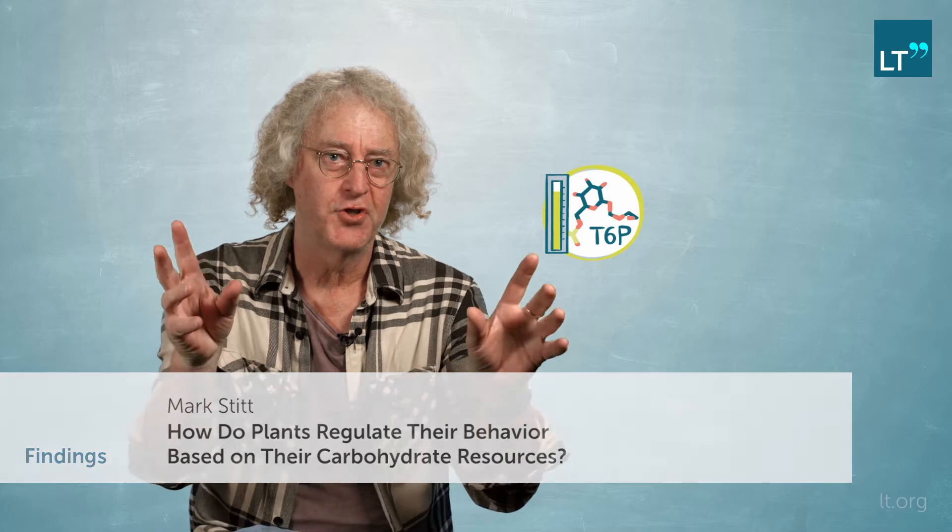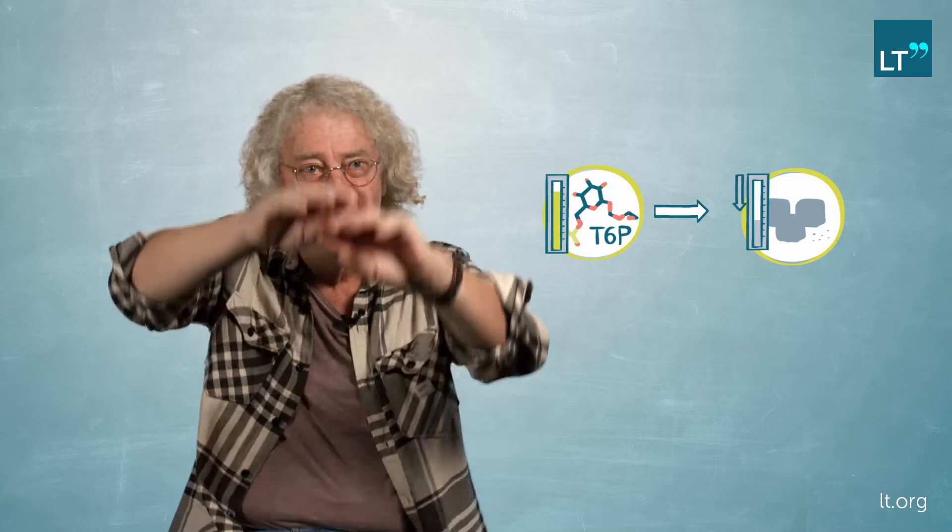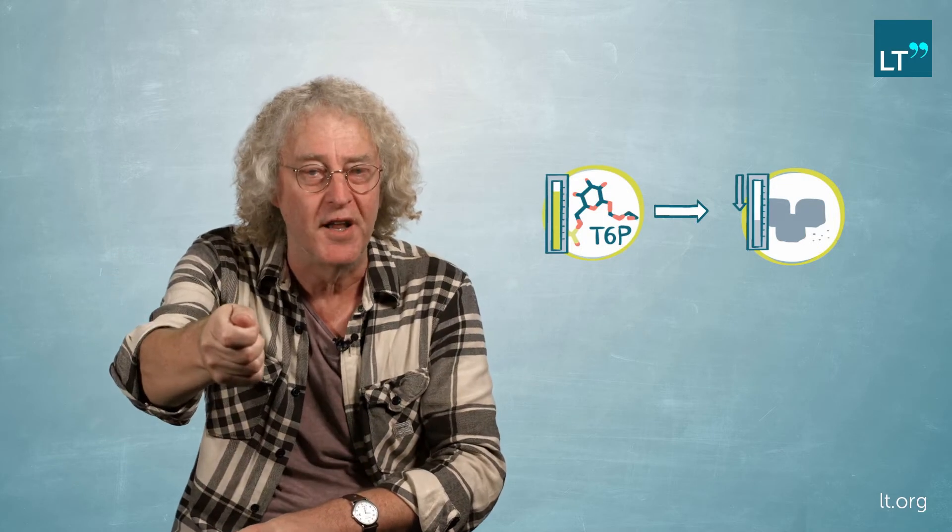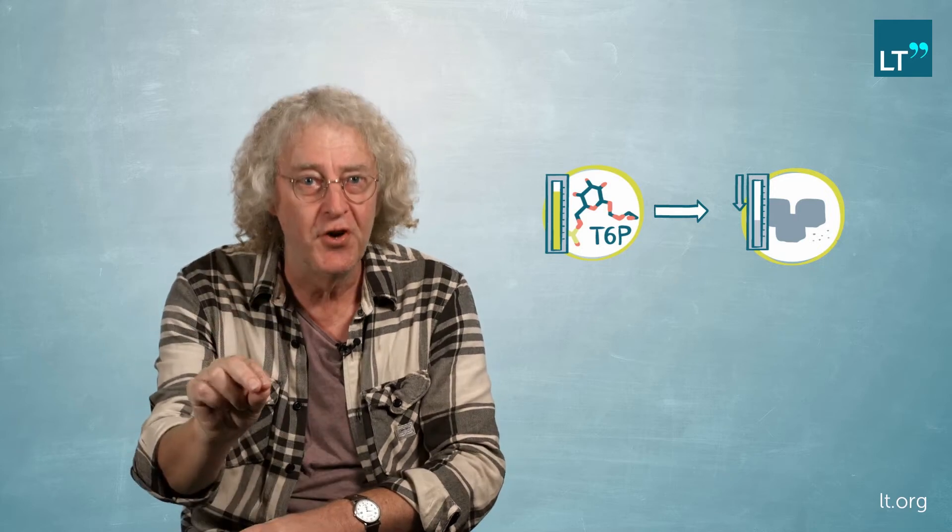The first thing we learned with this unbiased approach is that trehalose-6-phosphate drives sucrose concentrations down. You can understand this in an analogy to insulin. If you inject insulin, it drives your glucose down in your blood because it is used. Similarly, trehalose-6-phosphate promotes the use of sucrose. Sucrose pushes trehalose-6-phosphate up, and trehalose-6-phosphate promotes the use of sucrose — this is a loop. But when we push it up genetically, we push the sucrose down.